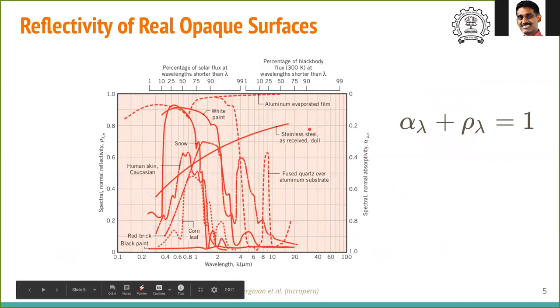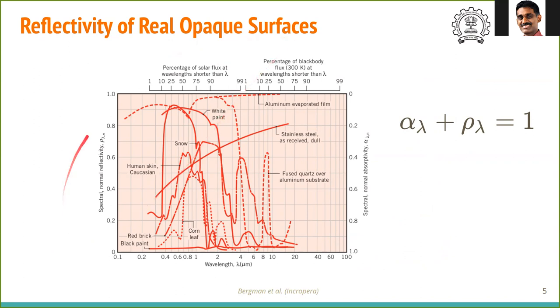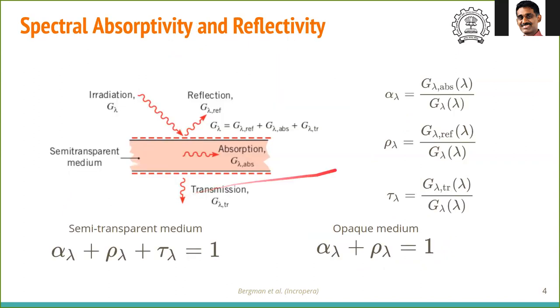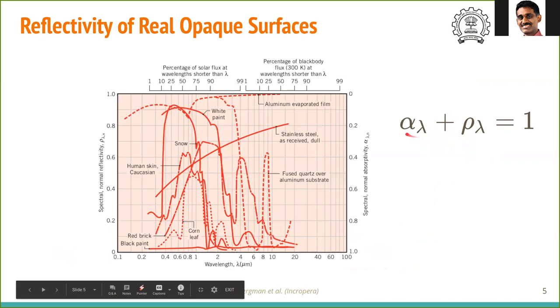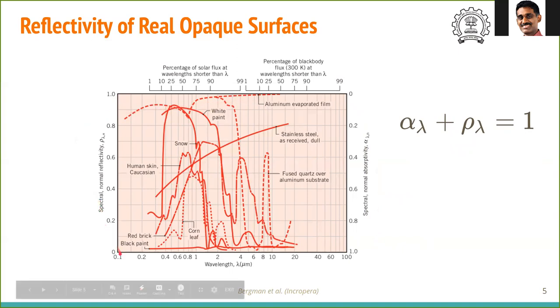To see some examples of real opaque surfaces, how the spectral absorptivity changes. This spectral absorptivity and spectral reflectivity—keep in mind that alpha plus rho equals one. What you see on the left-hand side is the reflectivity, and on the right-hand side is the absorptivity. If you see this goes from zero to one, this will simply go from one to zero. Let's take some examples.